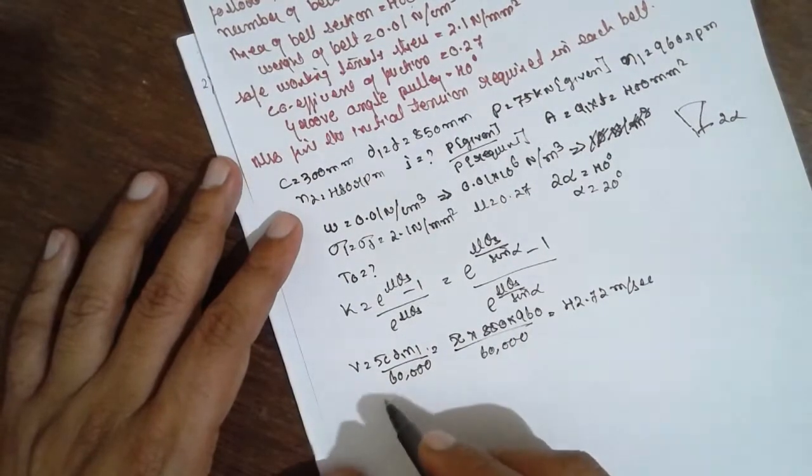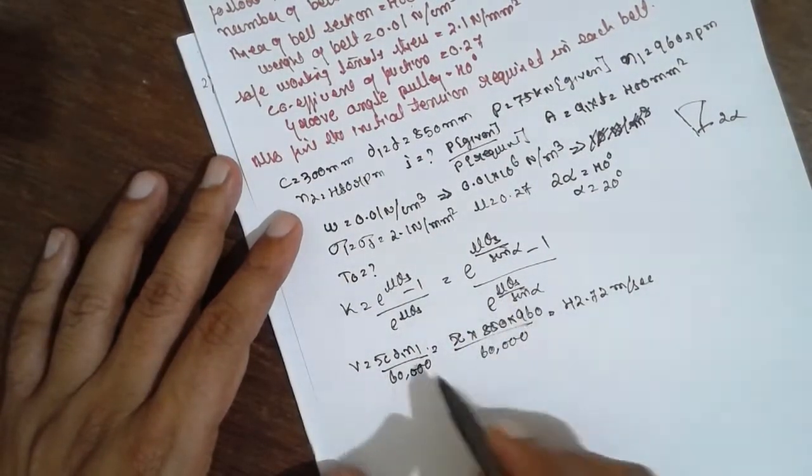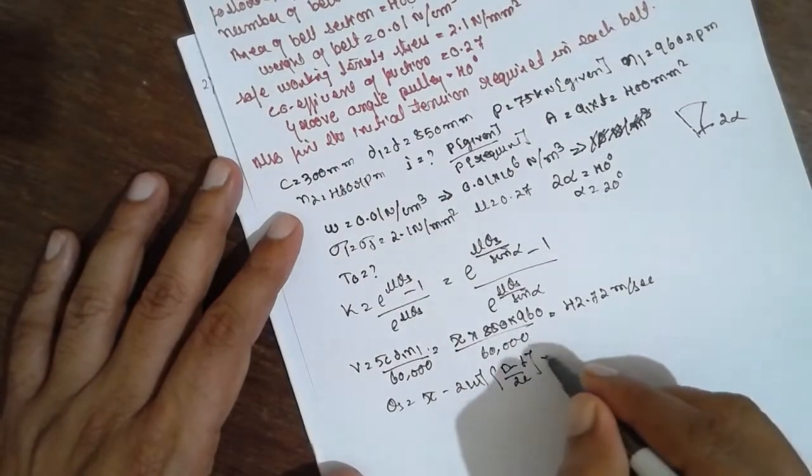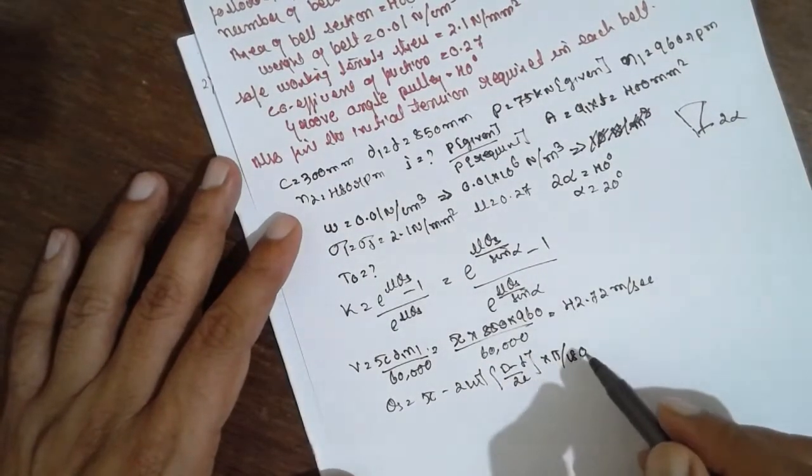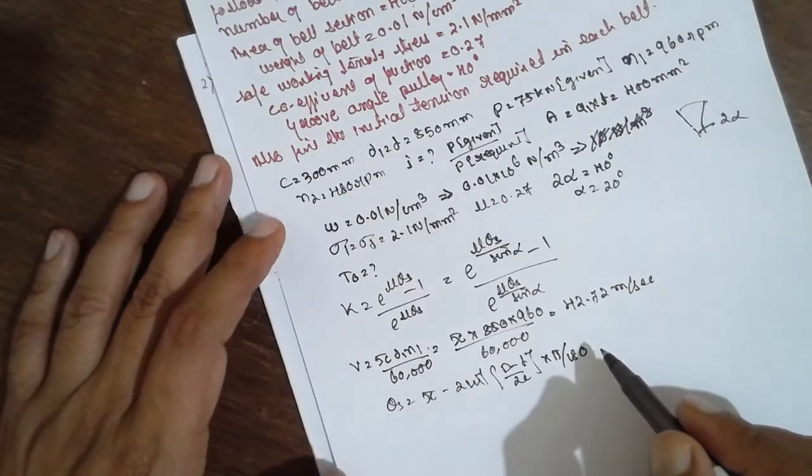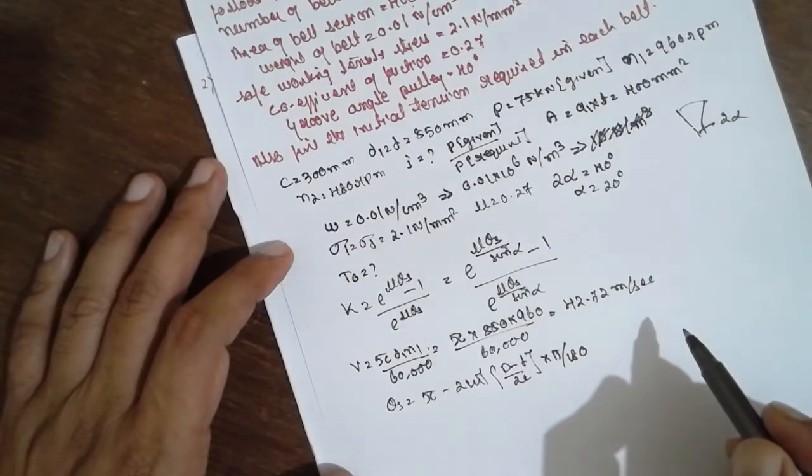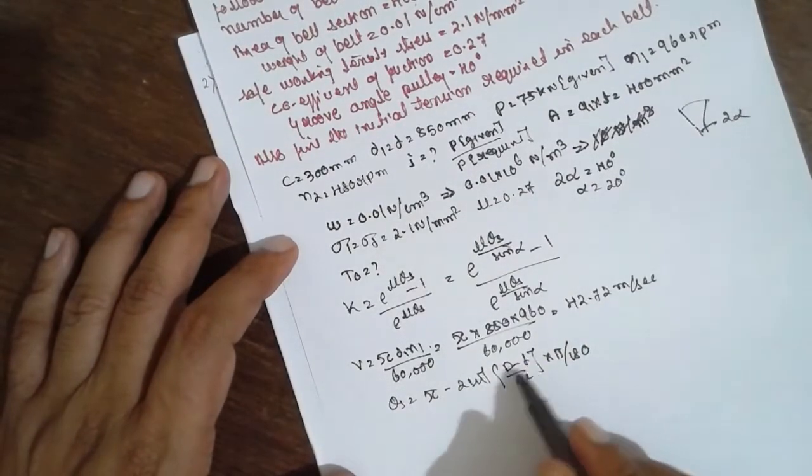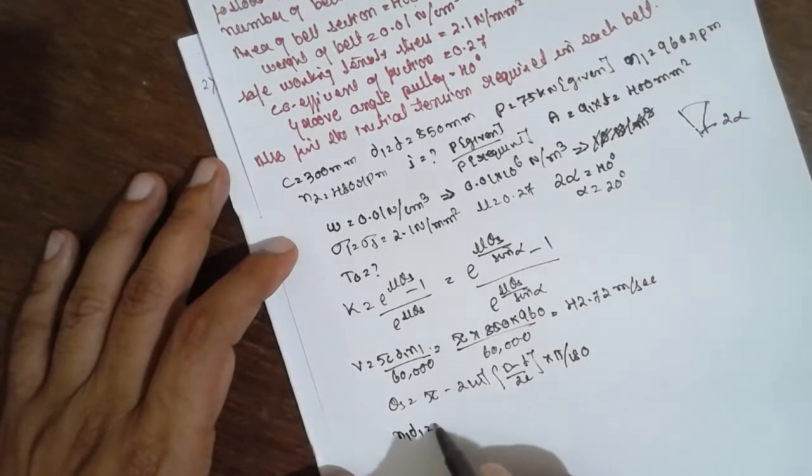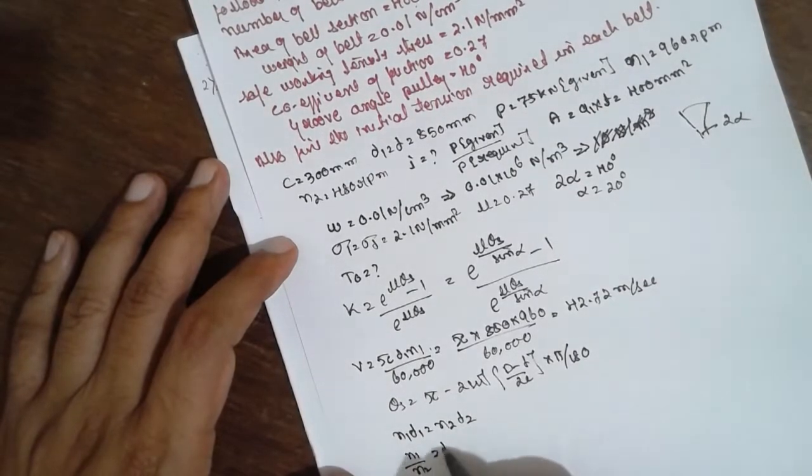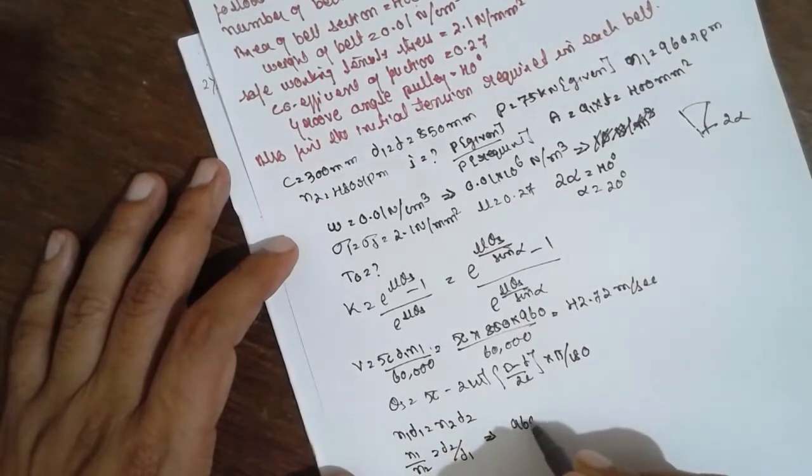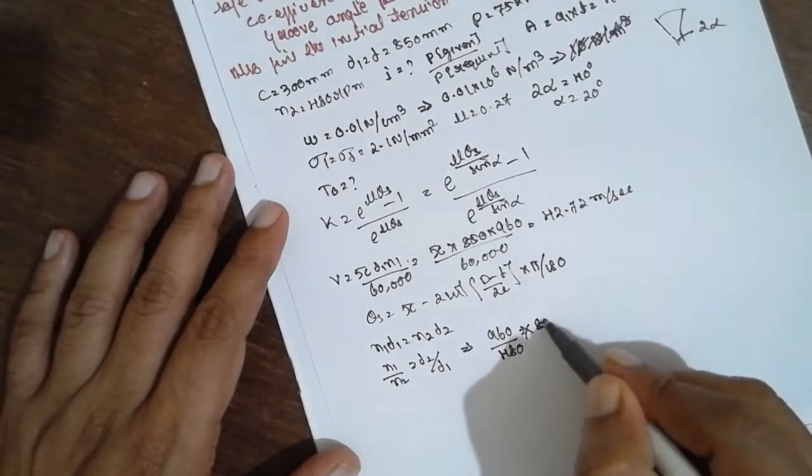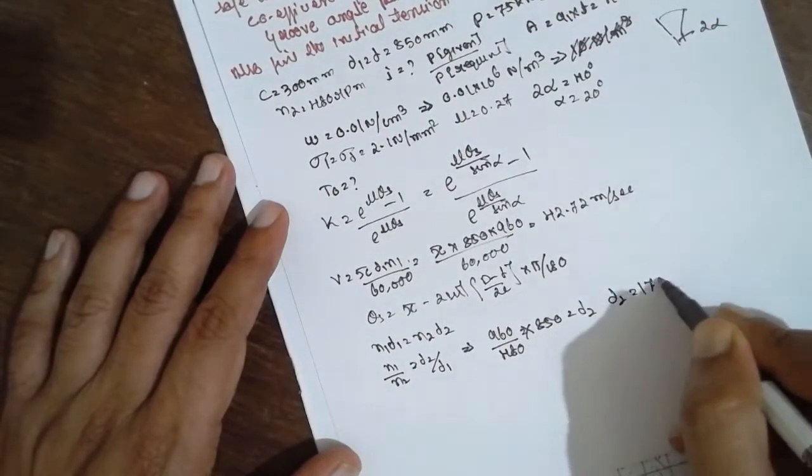This value, for this one we require theta_s. Theta_s is nothing but pi minus 2*sin^(-1)[(d2-d1)/(2c)] times pi/180. Before going to this formula, we have to find out d2, that is capital D. Therefore, N1*d1 = N2*d2. N1/N2 = d2/d1, therefore 960/480 is equal to d2/850. The d2 will be 1700 mm.